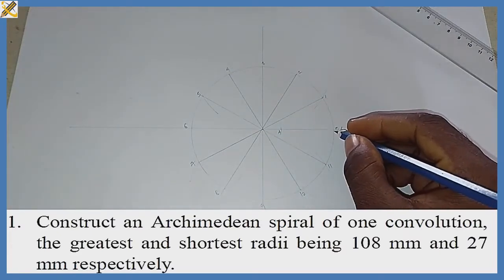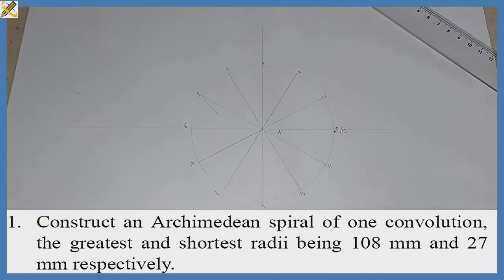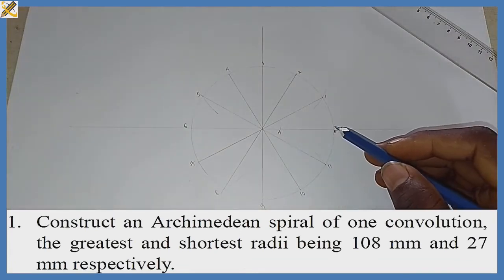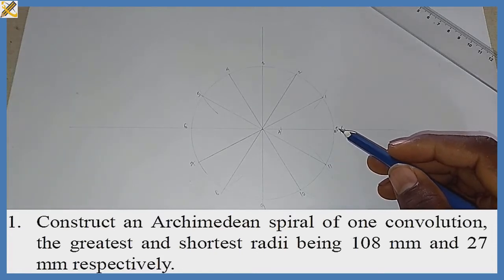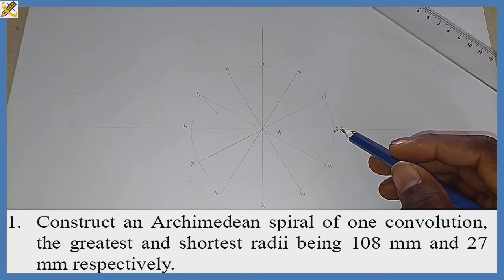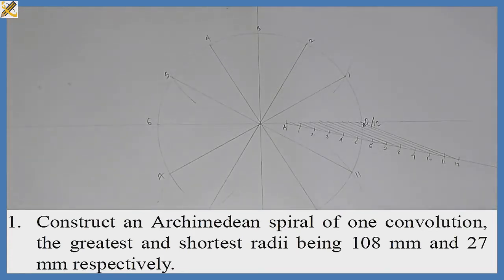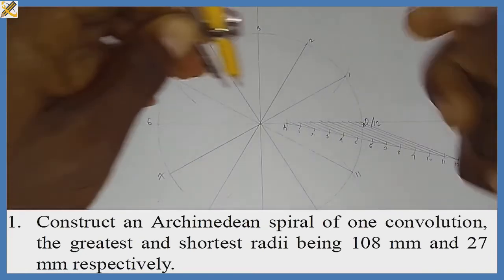Since we are developing this Archimedean spiral, the next procedure is to divide the distance between mark A and mark B into 12 equal halves. Kindly watch the linked video in the description below on how to divide a given line into a number of equal parts. After dividing the space between A and B into 12 equal halves, the next procedure begins.